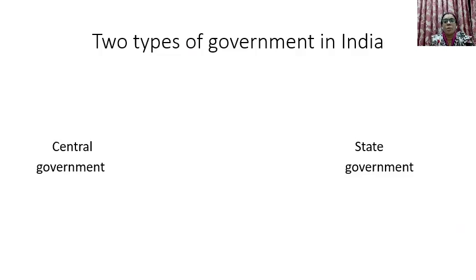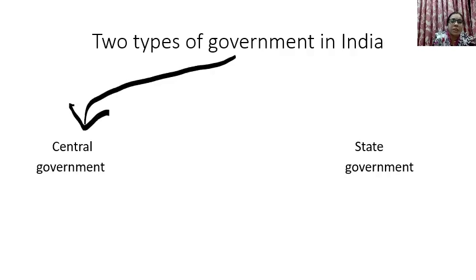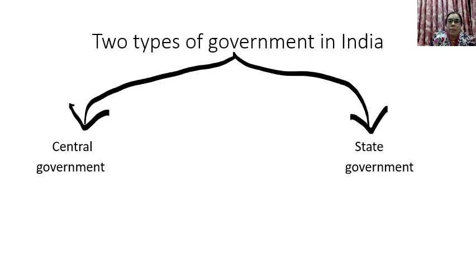Now, there are two types of government in India. The first one is the central government, and the second one is the state government. The country is run by these two types of government: number one, central government, and number two, state government.